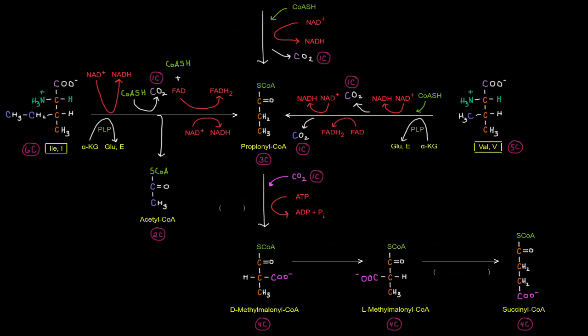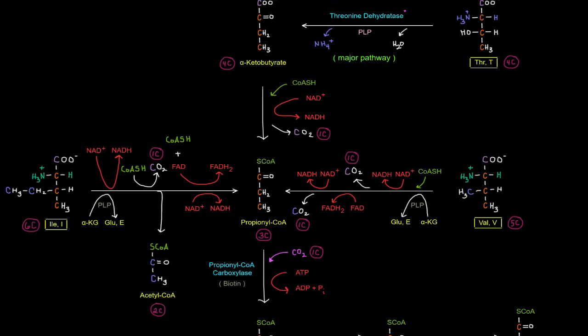And the propanyl CoA, we can carboxylate it adding carbon dioxide using ATP, using an enzyme, catalyzed by an enzyme called propanyl CoA carboxylase. And this requires biotin. Before I go on, I forgot to put the name of the enzyme here that acts on alpha-ketobutyrate. That is alpha-ketoacid dehydrogenase.